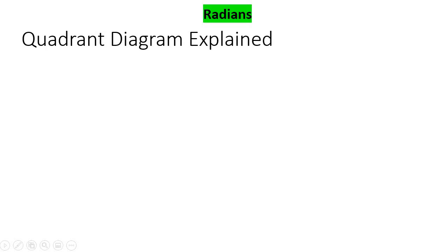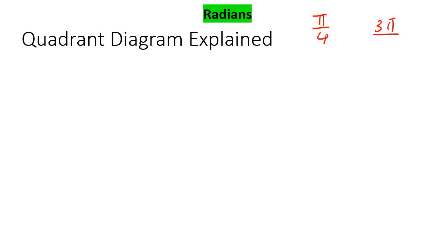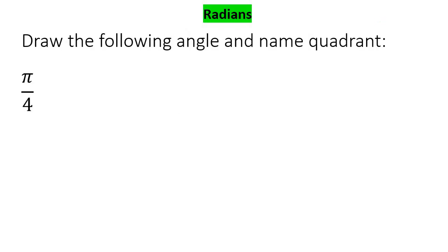In this lesson, we're going to be speaking about the quadrant diagram like we have before in previous lessons. However, in those lessons we used degrees, whereas now we're going to be using radians — things like pi over 4, 3 pi over 2. There's a difference between degrees and radians; they're different ways of measuring. So this lesson is going to be all about the quadrant diagram using radians. Our first example is pi over 4.